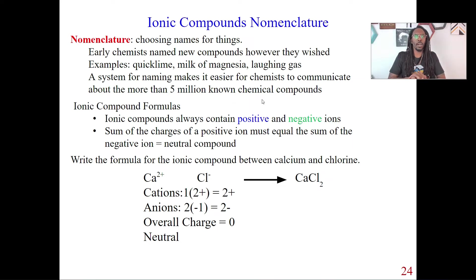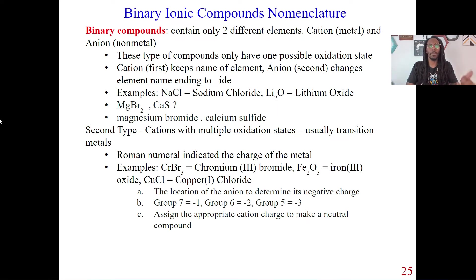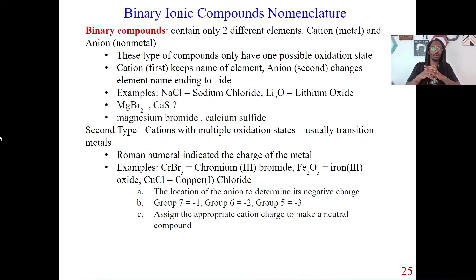You definitely want to pay attention to nomenclature, because if you don't understand the name of a compound, it will slow you down — you won't even know what you're looking at. Now let's talk about binary compounds, specifically binary ionic compounds. Binary means you have two different elements. In this case, you have your cation, which is a metal, and your anion, which is the non-metal. These types of compounds only have one possible oxidation state — for now, just think of oxidation state as a charge.